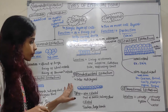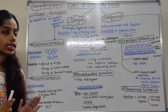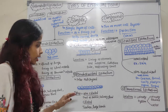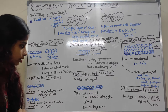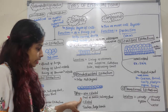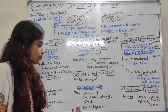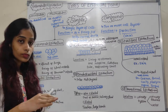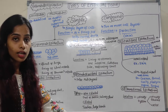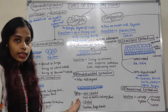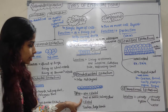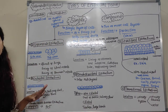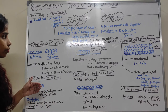Pseudostratified epithelium — 'pseudo' means false — looks like a multilayer but is actually a single layer. It is classified as non-ciliated and ciliated. Ciliated pseudostratified epithelium is found in the trachea and large bronchi, helping move materials out. Non-ciliated pseudostratified epithelium is found in the ducts of the parotid and salivary glands. This concludes simple epithelial tissue.